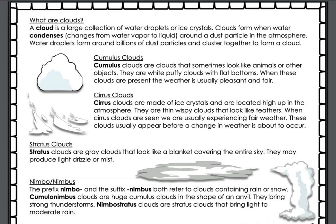Cirrus clouds are made of ice crystals and are located high up in the atmosphere. They are thin, wispy clouds that look like feathers. When cirrus clouds are seen, we are usually experiencing fair weather, though these clouds usually appear before a change in weather is about to occur.